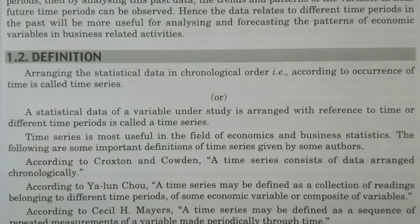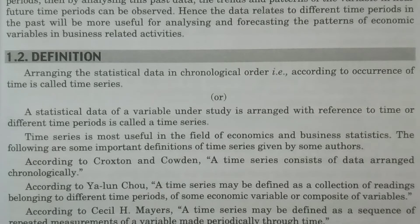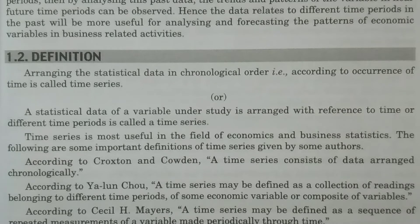For example, data arranged in accordance with some particular year — for the last 10 years — such as the trade of a commodity, sales, profits, or agricultural production can form a time series. Data may also be arranged for 12 months of a particular year, or as monthly, quarterly, or daily data. For instance, sales observed in a week, temperature observed in a week — any statistical data arranged in accordance with time is called time series. This is past data, already recorded, and such data is known as time series.